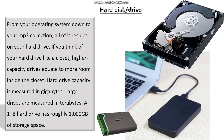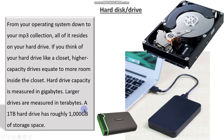Moving on to the next — hard disk. From your operating system down to your MP3 collection, all of it resides on your hard drive. Here is the hard drive — these are external hard drives, and this is the actual hard drive inside your CPU. If you think of your hard drive like a closet, higher capacity drives equate to more room inside. Hard drive capacity is measured in gigabytes; larger drives are measured in terabytes. A 1 TB hard drive has roughly 1000 GB of storage space — that is a lot.